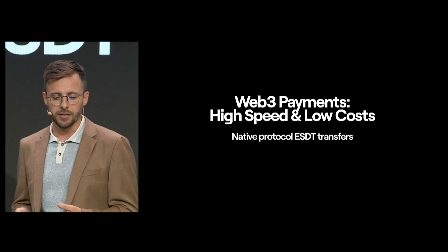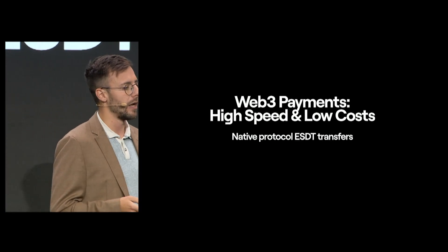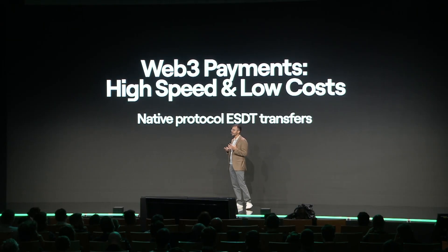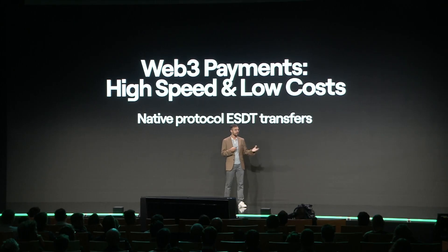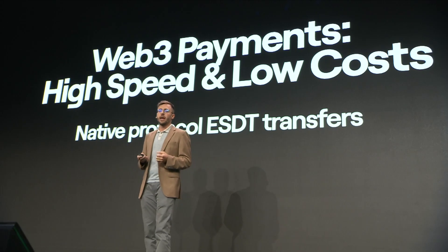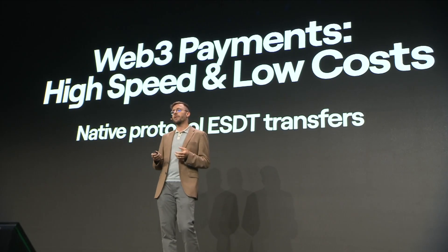Coming back to more technical things, I want to highlight an important implication of having tokens built into the protocol level. Token transfer transactions do not require the VM to be processed. Instead, token transfers are done via regular transactions. You only add the token ID and the amount to be transferred into the data field. This increases the transfer speed and reduces the gas requirements. As no smart contract is involved in transferring the tokens, the Aeron network can process up to 15,000 token transfers per second, computing everything involved: gas, consensus, and peer-to-peer block propagation. The implications for payments and similar transactions are hard to overstate.